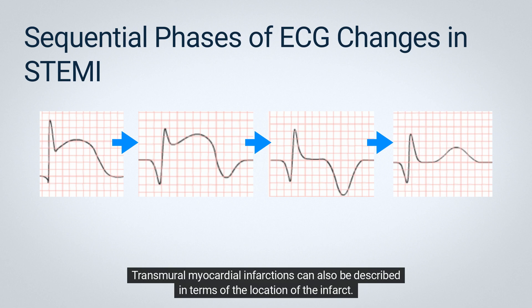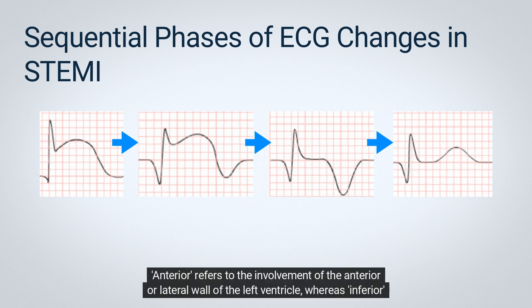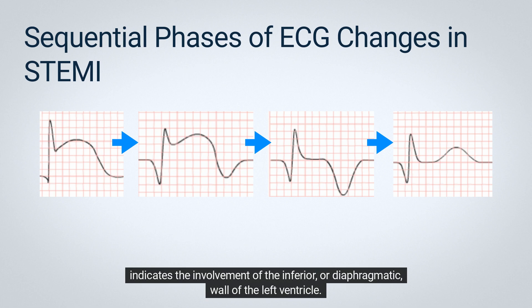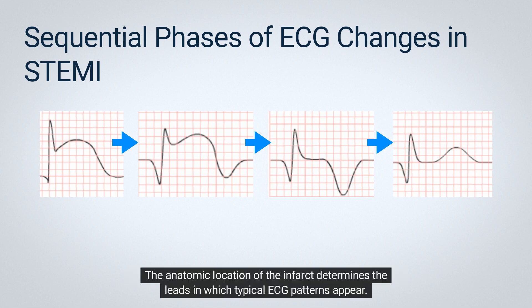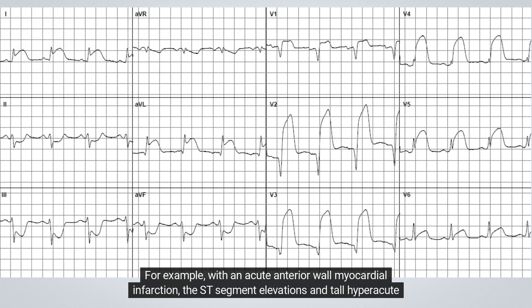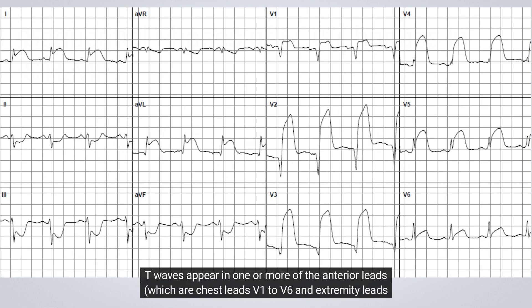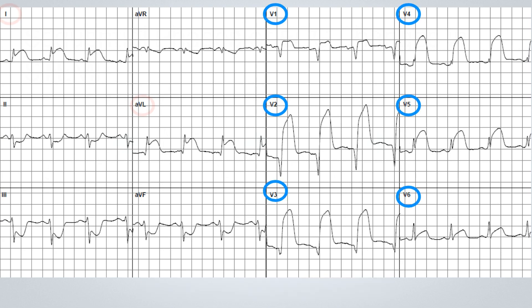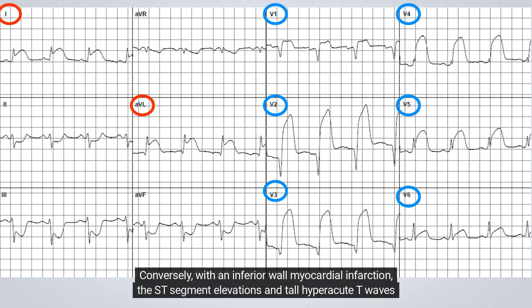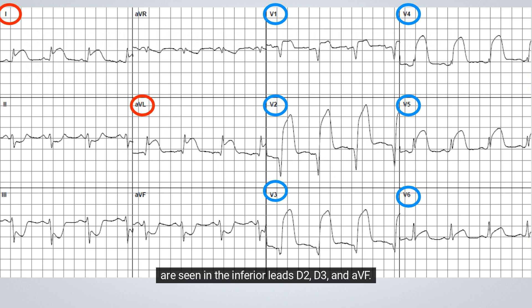Transmural myocardial infarctions can also be described in terms of the location of the infarct. Anterior refers to the involvement of the anterior or lateral wall of the left ventricle, whereas inferior indicates the involvement of the inferior or diaphragmatic wall. The anatomic location of the infarct determines the leads in which typical ECG patterns appear. With an acute anterior wall myocardial infarction, ST-segment elevations and tall hyperacute T waves appear in one or more of the anterior leads — chest leads V1 through V6 and extremity leads D1 and AVL. With an inferior wall myocardial infarction, the ST-segment elevations and tall hyperacute T waves are seen in the inferior leads D2, D3, and AVF.